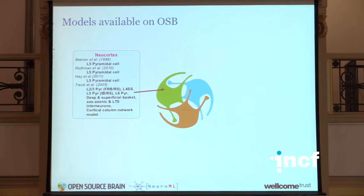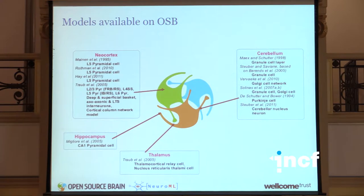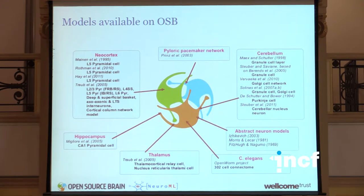What types of models do we actually have on Open Source Brain? We have cell and network models from the neocortex, thalamus, and cerebellum — mainly because we're interested in that in the Silver Lab — as well as hippocampus, classic models like Prince and Marder's pyloric pacemaker network, more abstract neural network examples like FitzHugh-Nagumo and Izhikevich, and also links to ongoing projects like OpenWorm.